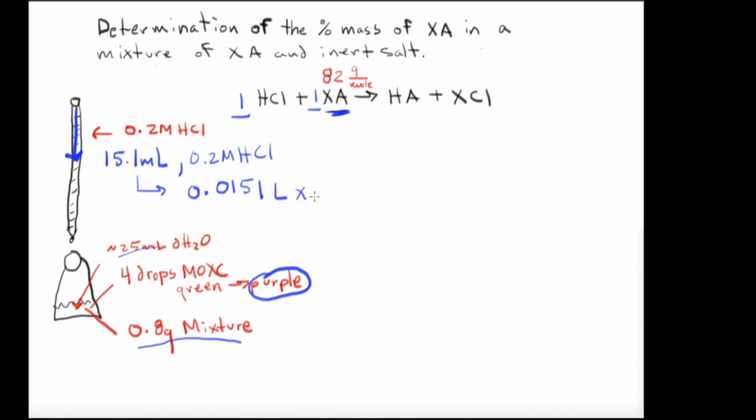Then this is going to be times 0.2 moles of HCl per liter, which is going to give us, let me calculate it quickly. So it's going to be 0.2 molar times 0.0151. So this is going to equal 0.00302 moles of HCl.